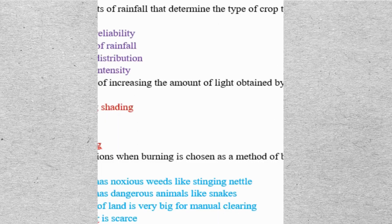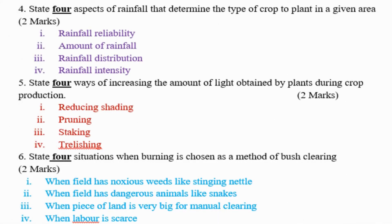We are doing revision agriculture paper 2 and we are having questions and answers. Question number 4: State 4 aspects of rainfall that determine the type of crops to plant in a given area. Number 1: rainfall reliability. Number 2: amount of rainfall. Number 3: rainfall distribution. Number 4: rainfall intensity. Those are the 4 aspects of rainfall.